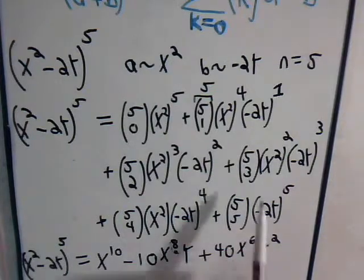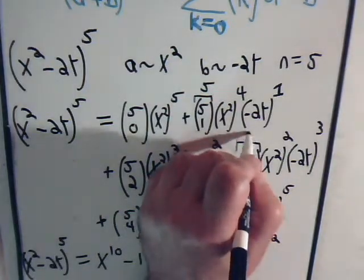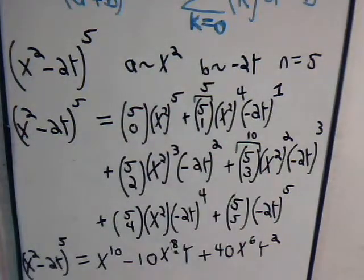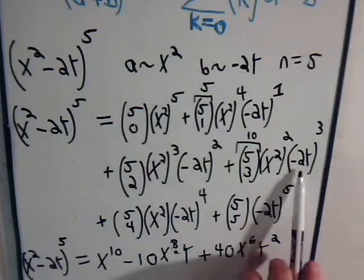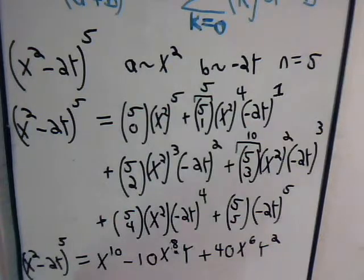And for this term, this also, that binomial coefficient, that also is equal to 10. Here, though, we're going to have minus 2 cubed, that's going to be minus 8. So this will be minus 80 times x to the fourth times y cubed.